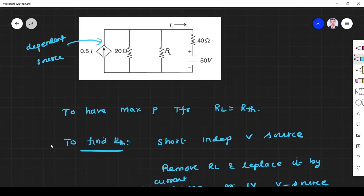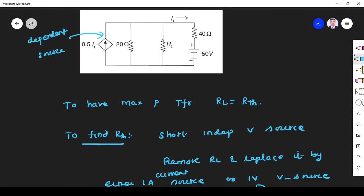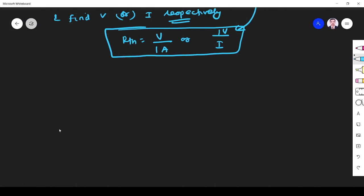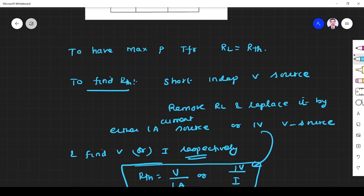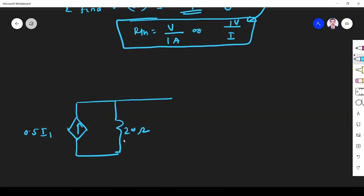So in this problem, I am going to replace RL by current source. So to find R-thevenin, keep this one as it is, this one as it is, RL should be replaced by 1 ampere current source. This is independent source, I have to short it. So the circuit is redrawn like this. So this is 0.5 I1, then it is 20 ohm. Then I am going to replace this load resistor by 1 ampere current source. This method should be used when we have a dependent source in the circuit.